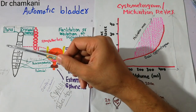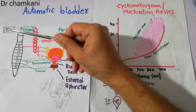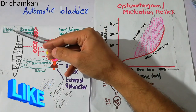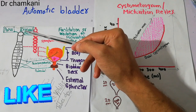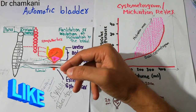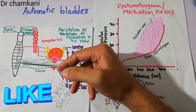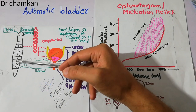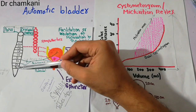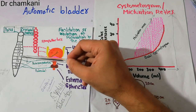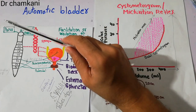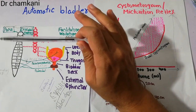The micturition reflex is controlled at the spinal cord level. There are also some facilitative and some inhibitory centers in the pons and in the cerebral cortex of the brain, which help the sacral segment of the spinal cord to start or stop a micturition reflex. But most of the time, the sacral segment of the spinal cord alone is sufficient to start and stop a micturition reflex. The brain only acts as support.